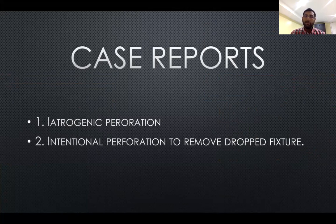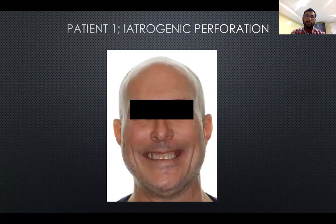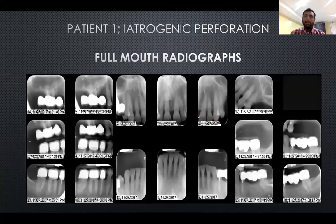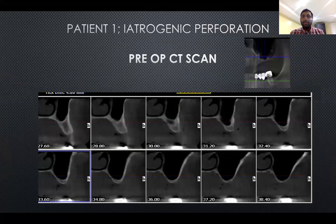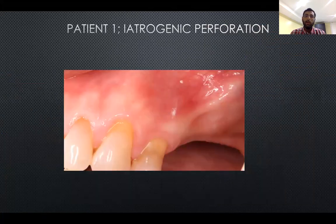The first patient on the left side of the poster is a Caucasian male who presented with a chief complaint of missing teeth on the upper left side. You can see in the CT scan that the patient has two septa, anterior and posterior. The posterior one is a smaller one.